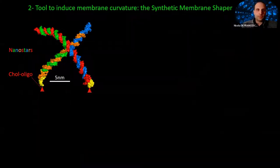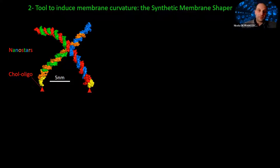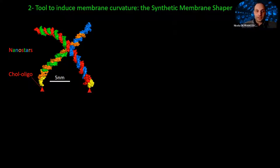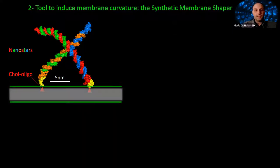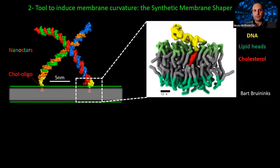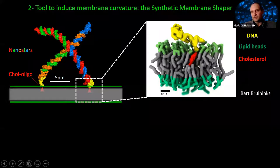For the tool to induce membrane curvature, we use what we call Synthetic Membrane Shape, or SMS. SMS is the collective name for an ensemble of many cross-shaped DNA nanostructures called nanostars. These nanostars are about 100 kDa in size and are functionalized with two cholesterol oligos each. In the presence of a membrane, these soluble nanostars insert very efficiently via the cholesterol anchors. An all-atom simulation by our collaborator Bart Hoogenboom from UCL shows the cholesterol in red inserted into the bilayer, dragging the DNA nanostar with it.